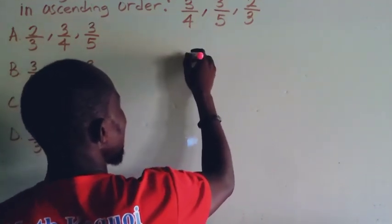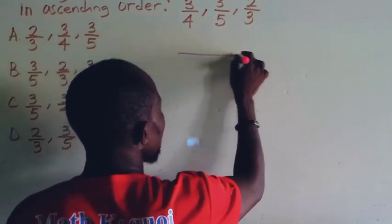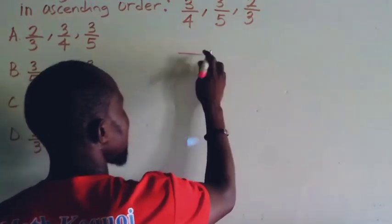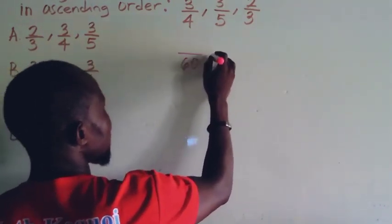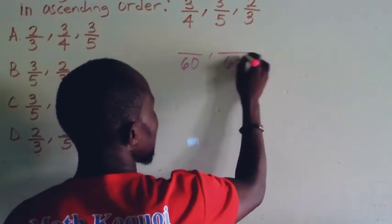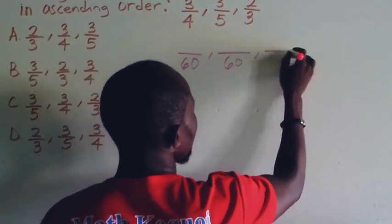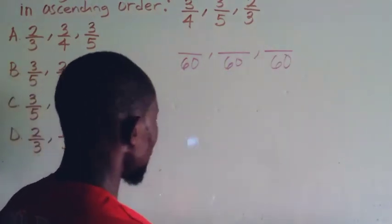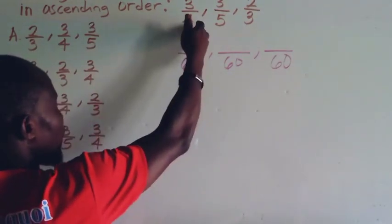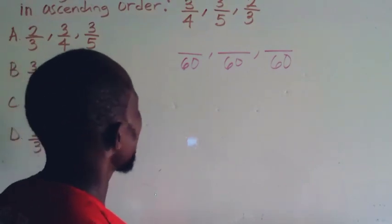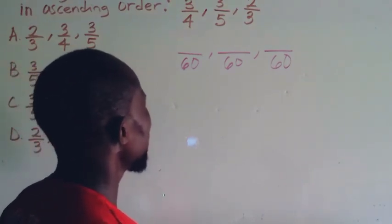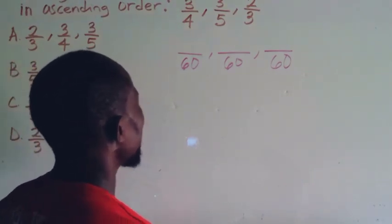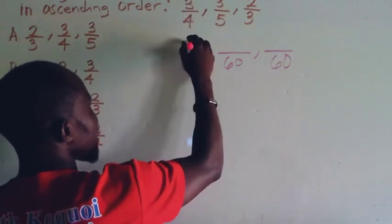So we write 60 here. Now, 4 going into 60 - how many times? 4 goes in 15 times. So 15 times 3 gives us 45 over 60.